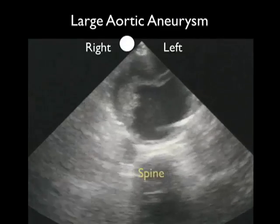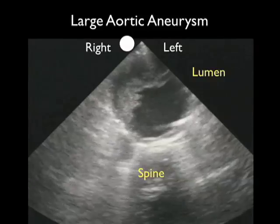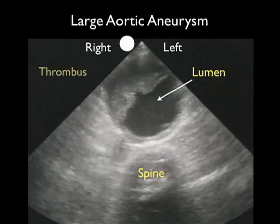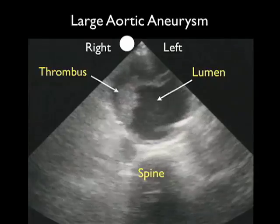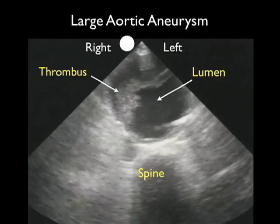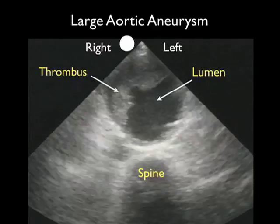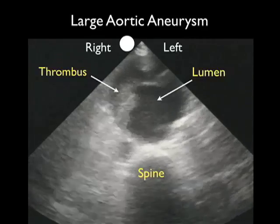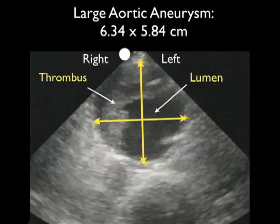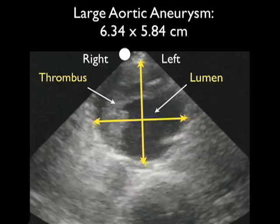This video clip shows another short axis orientation of a very large AAA in a patient who presented to the ED with abdominal pain. We mark the spine as our landmark, and anterior to the spine we see a very large AAA. Notice the true lumen and the accumulation of thrombus substantially anterior to it. Placing calipers from outer wall to outer wall in short axis configuration, we come up with an aneurysm of 6.3 by 5.8 centimeters, again meeting the criteria for a AAA greater than 3 centimeters.